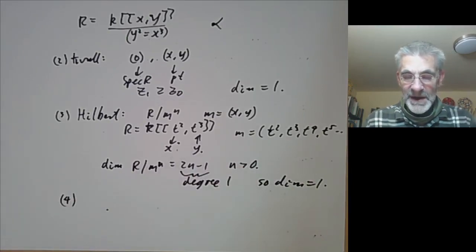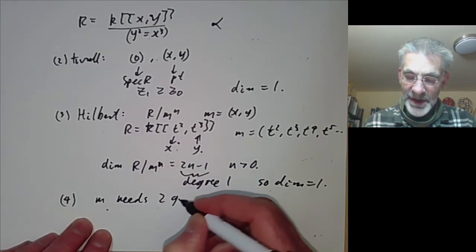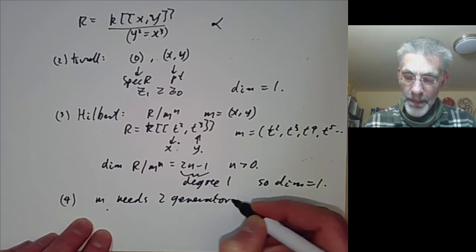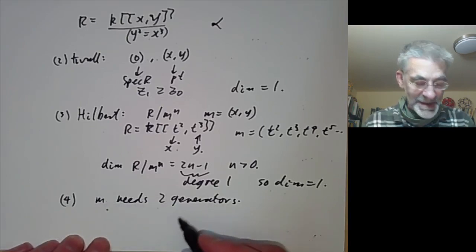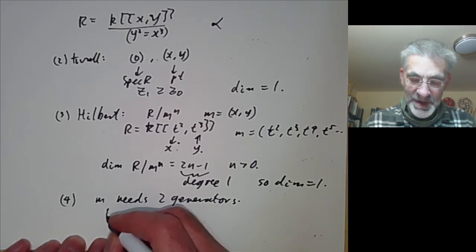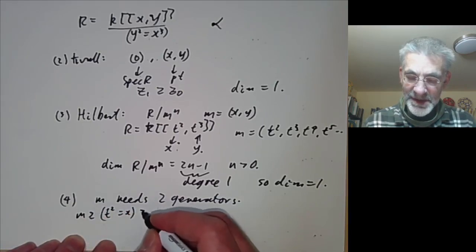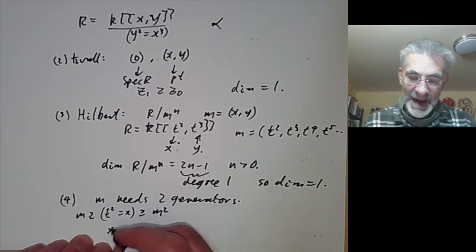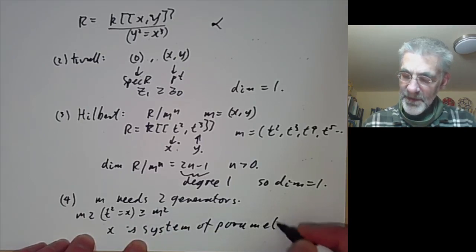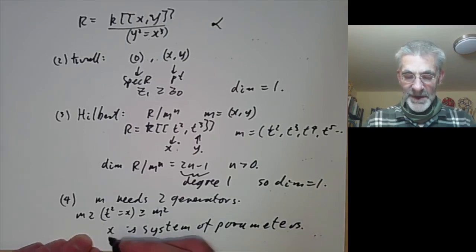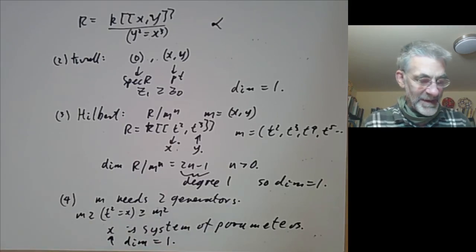For the system of parameters definition, note that M needs two generators. However, we can find an ideal contained in M and containing some power of M. Looking at the ideal generated by t² = x, we have M contains (x) and (x) contains M². So x alone is a system of parameters with only one element, giving dimension 1 by this definition as well.